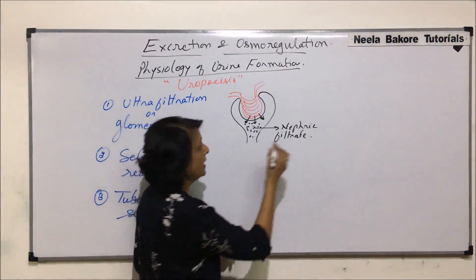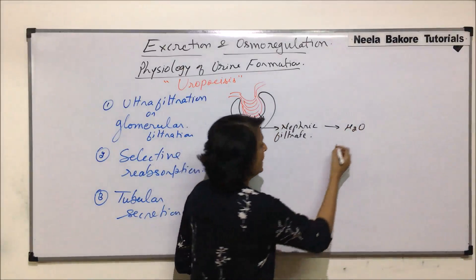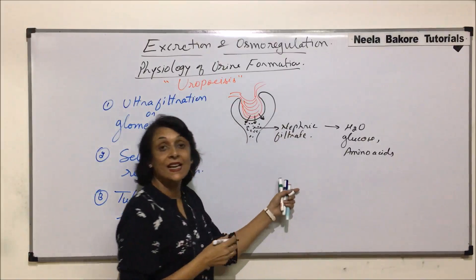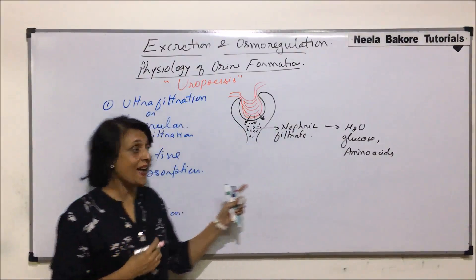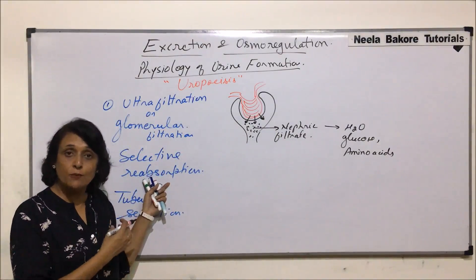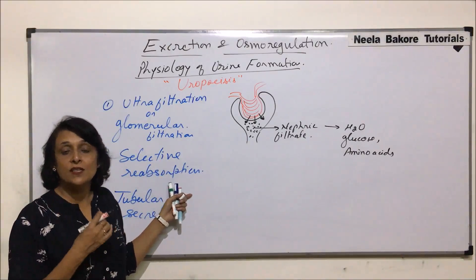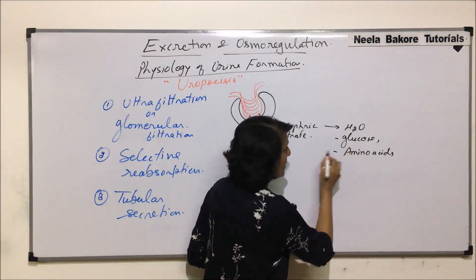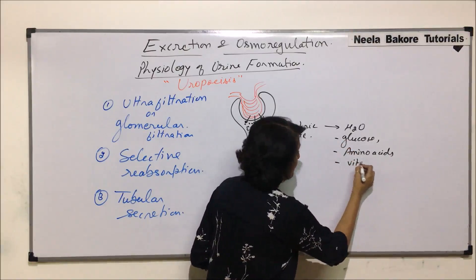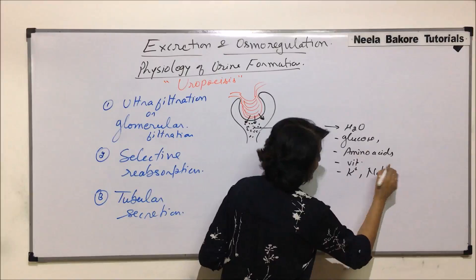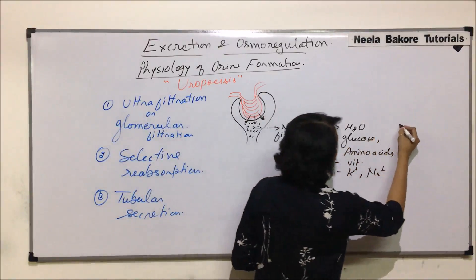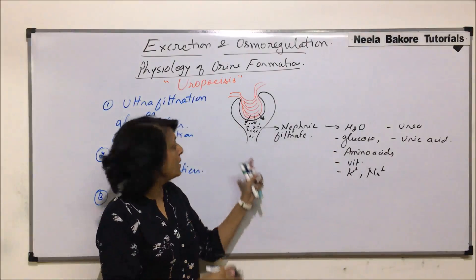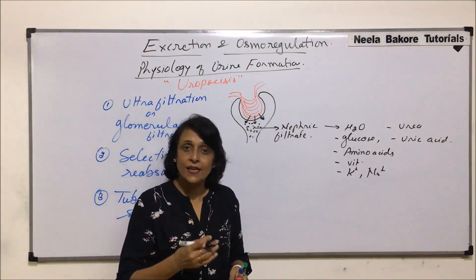What all things are there in this nephric filtrate? The nephric filtrate has water, glucose, and amino acids — these are the things which are very important and we want to take them back. That is where the second step, reabsorption or selective reabsorption, is going to work. Those things which are essential for us would be reabsorbed by the tubular part. So water, glucose, amino acids, certain vitamins, potassium ions, sodium ions — these things are present. Plus urea and uric acid, which are to be eliminated, are still there.